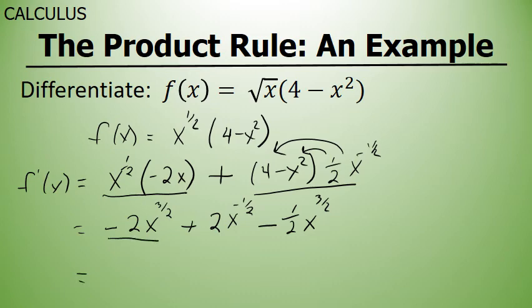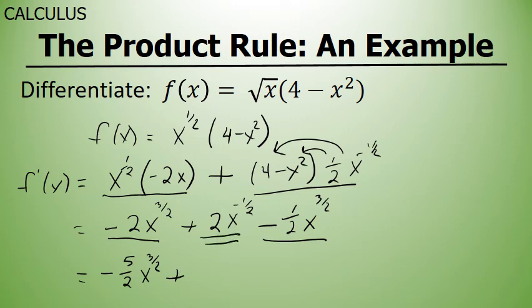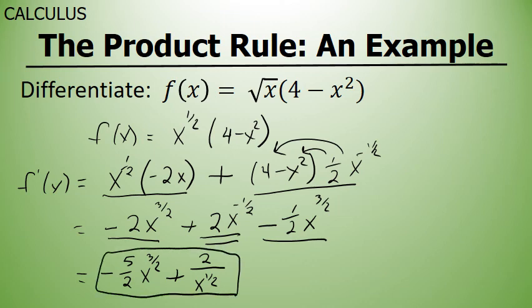This polynomial has two like terms: negative 2x to the 3 halves, and negative 1 half x to the 3 halves, and that sum is negative 5 halves x to the 3 halves, plus the term 2x to the negative 1 half. I'm going to rewrite 2x to the negative 1 half without a negative exponent as 2 over x to the 1 half. The derivative of the square root of x times 4 minus x squared is negative 5x to the 3 halves power, plus 2 over x to the 1 half.